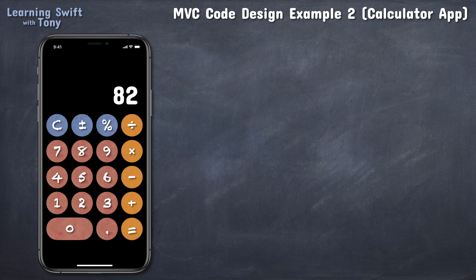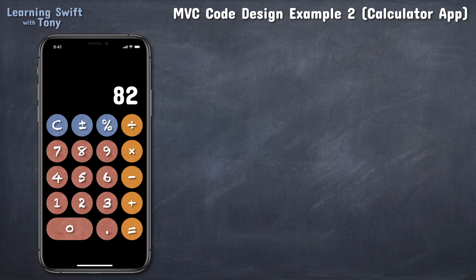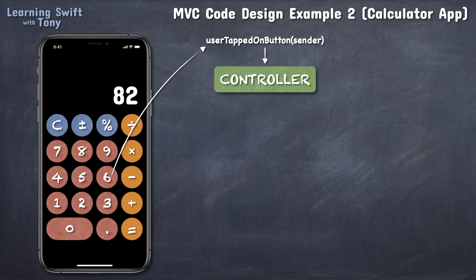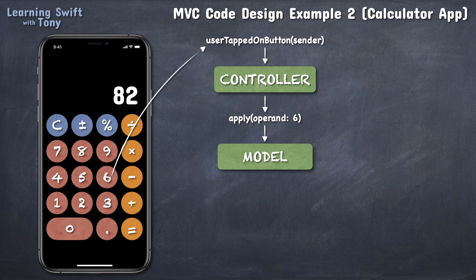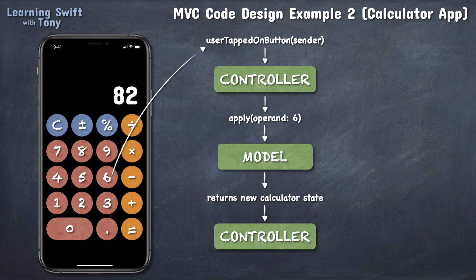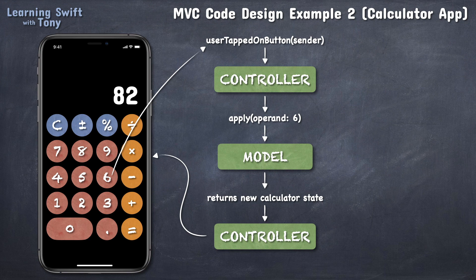Let's say the user taps on button 6, so the view is sending a user tapped on button message to the controller. The controller determines the button is an operand button and asks the model to apply operand 6. The model then takes the operand and returns a new calculator state back to the controller, which in turn tells the view to reflect the new calculator state on the screen. This will mean that the value displayed will be updated to 826.